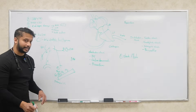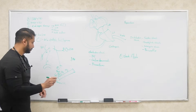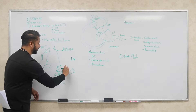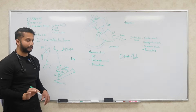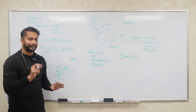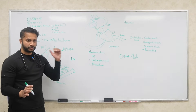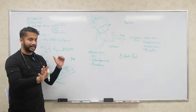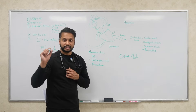Beta-2 and M3 are not innervated, but when stimulated they cause vasodilation. Remember: alpha-1 stimulation gives vasoconstriction; beta-2 and M3 give vasodilation. This becomes important when we discuss pressors.